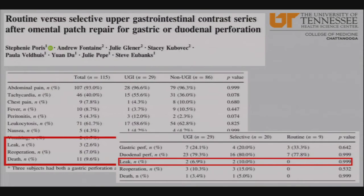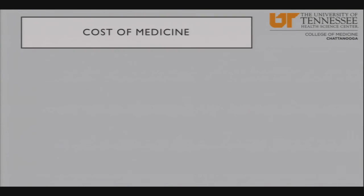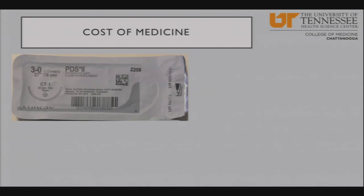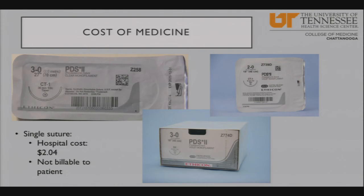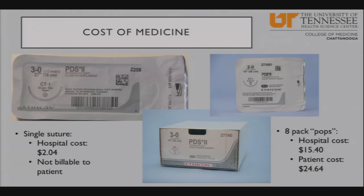On the cost of medicine: single-pack sutures like 3-0 PDS are not billable individually to a patient. A pack costs the hospital $2.04 and gets lumped into operating room fees. However, a pack of eight pop sutures costs the hospital $15, and they do charge patients individually for those packs — $24.64 to the patient. Thank you for letting me share this fun case and I'd be happy to answer any questions.